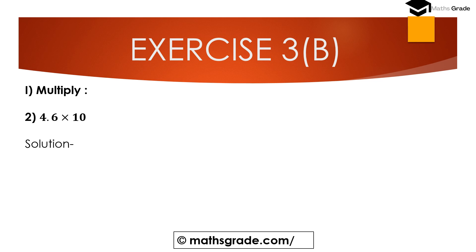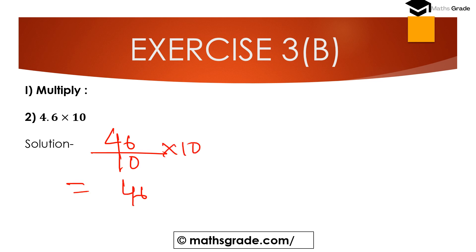Question number 2: 4.6 multiplied with 10. In 4.6 there is only one single digit after the decimal point. Convert to fractional form: 46 divided by 10, then multiply with 10, which gives 46. Using the shortcut: move the decimal point one place to the right, so 4.6 becomes 46.0, which equals 46.